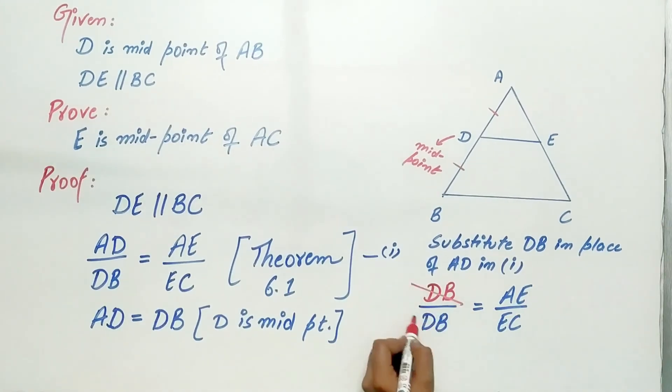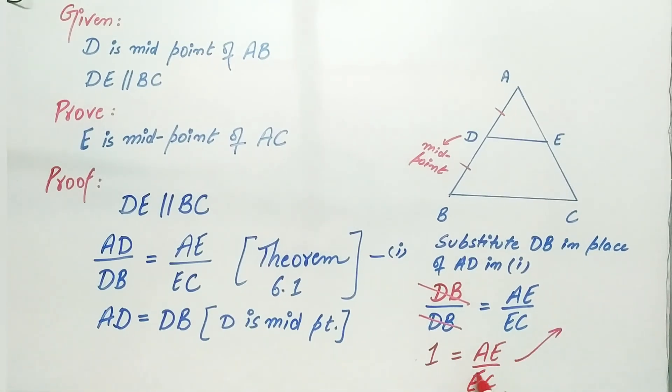Now, DB by DB is 1. 1 is equal to AE by EC. Since EC is in the denominator, transpose it. AE is equal to EC.